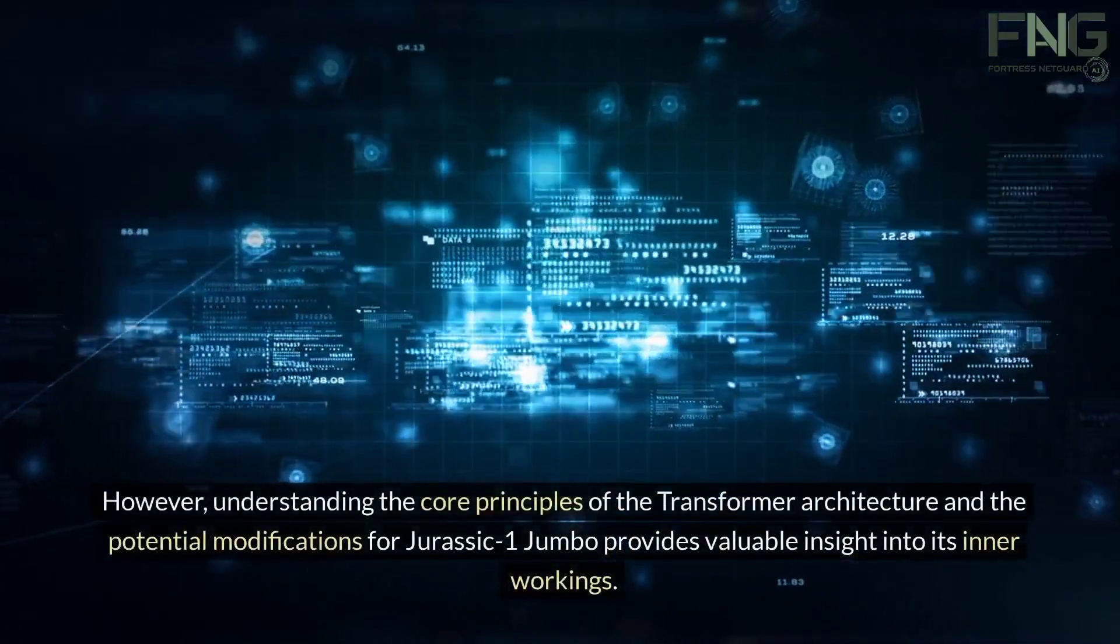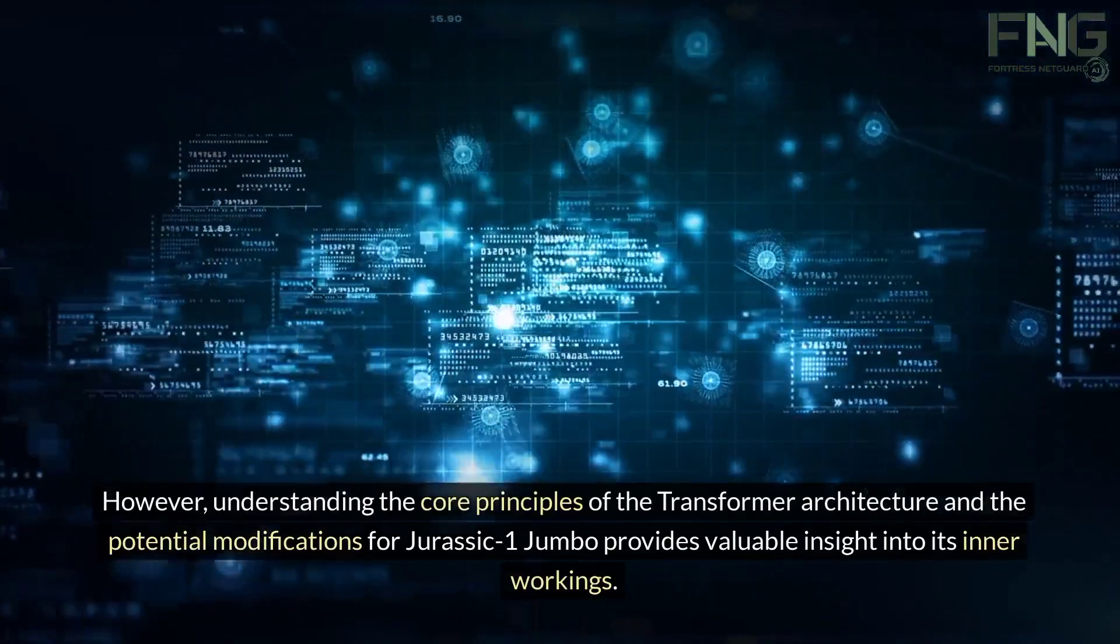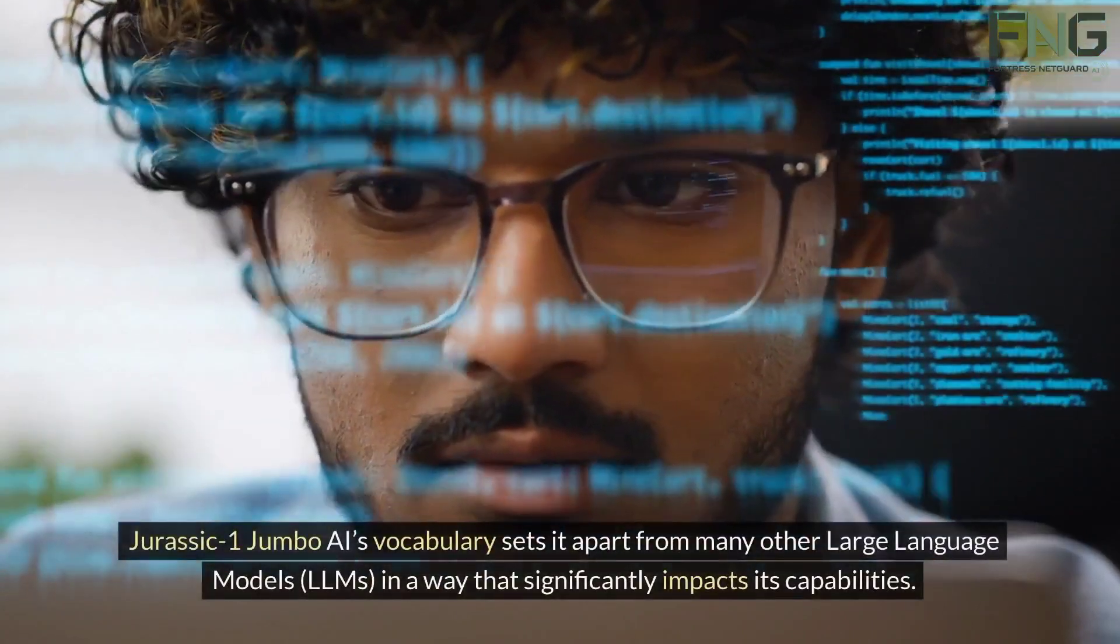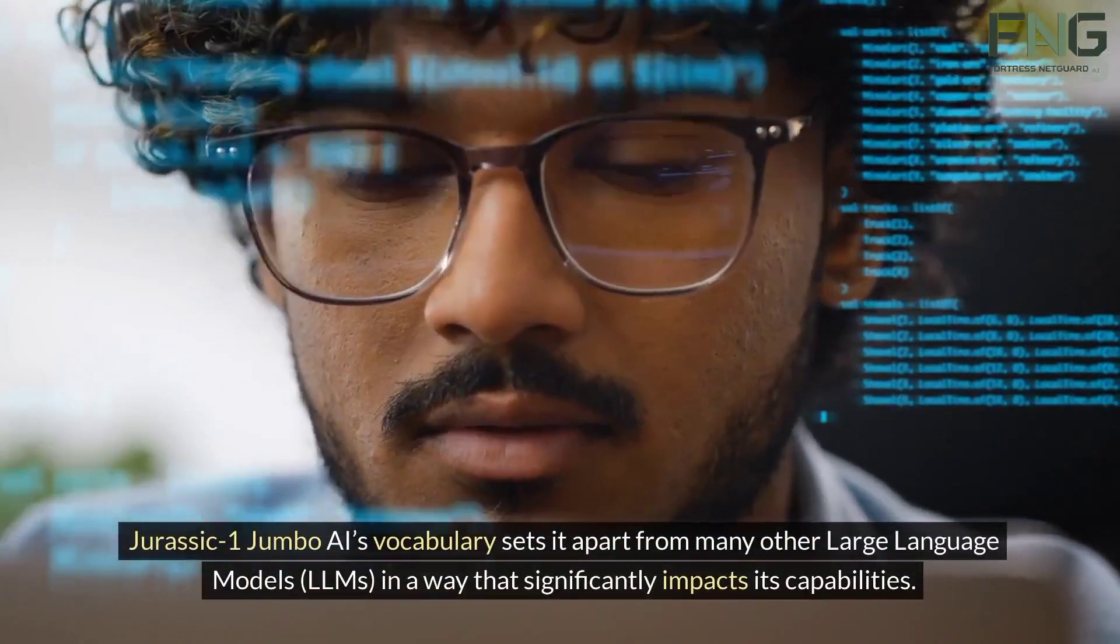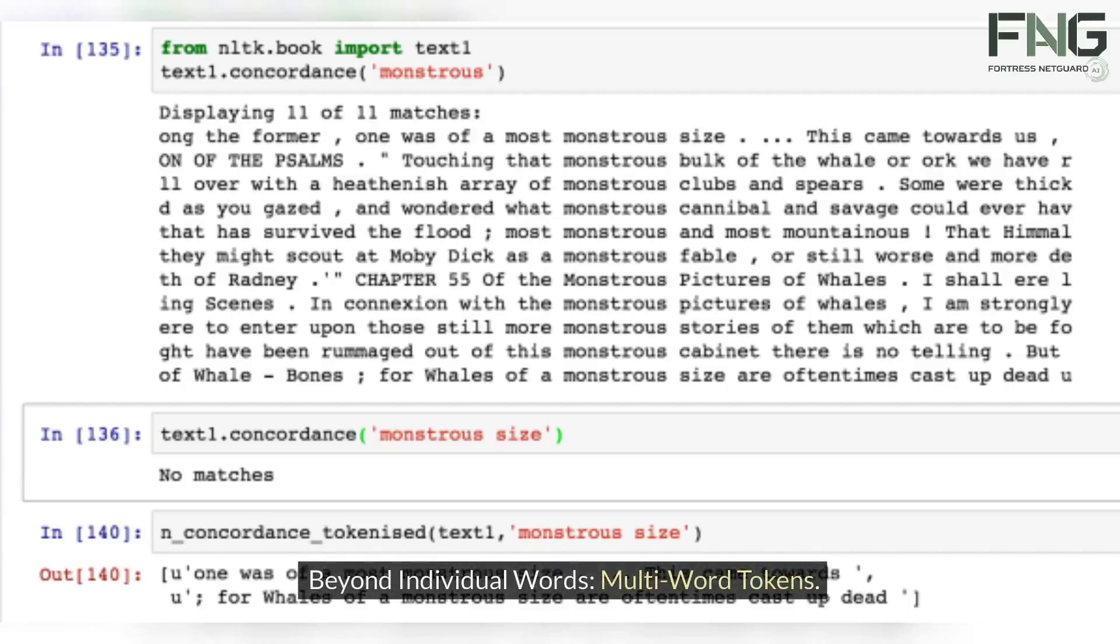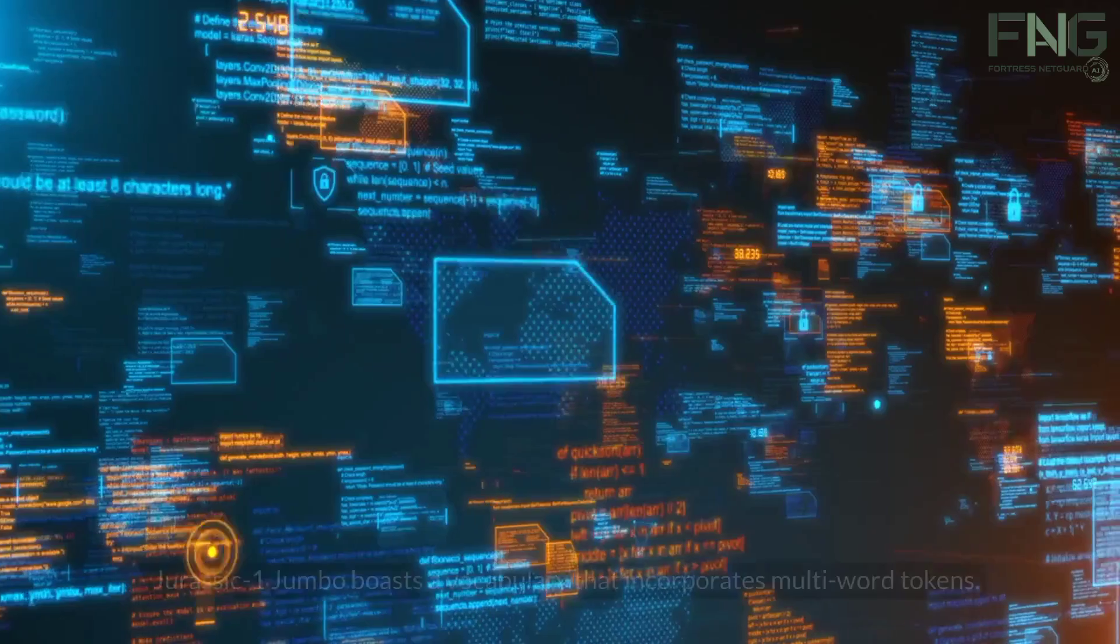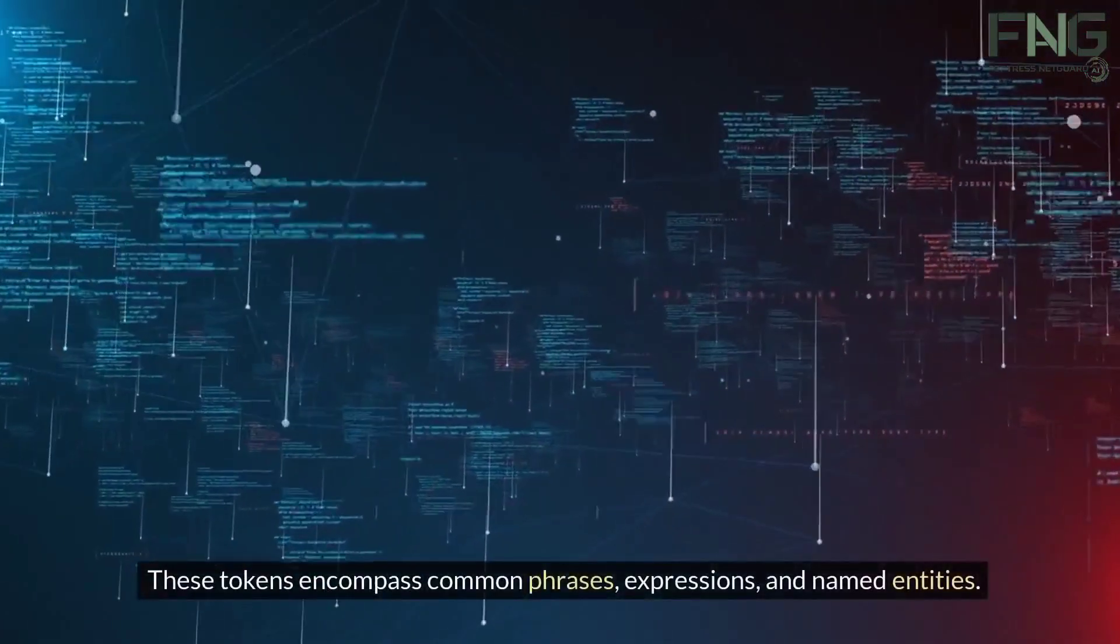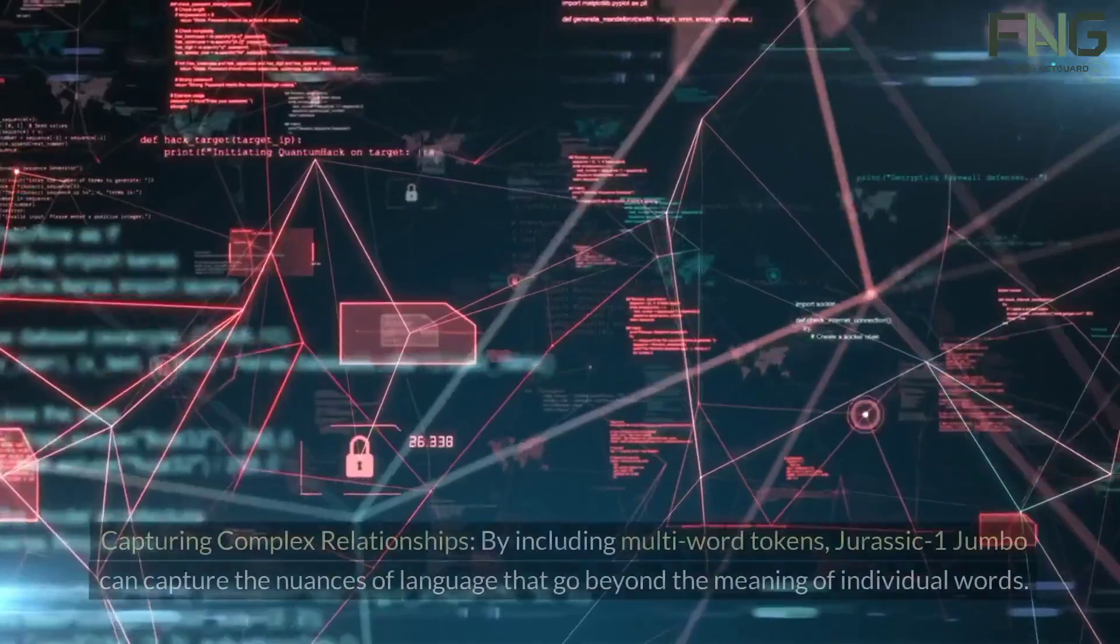How does Jurassic-1 Jumbo AI's vocabulary work? Jurassic-1 Jumbo AI's vocabulary sets it apart from many other large language models in a way that significantly impacts its capabilities. Here's a deep dive into how its unique vocabulary approach works: Beyond individual words—multi-word tokens. Unlike traditional LLMs that rely solely on individual words as their building blocks, Jurassic-1 Jumbo boasts a vocabulary that incorporates multi-word tokens. These tokens encompass common phrases, expressions, and named entities.